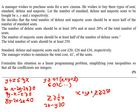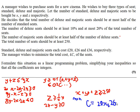Now we just need to write the linear programming objective function. Standard, deluxe, and majestic seats cost 20, 26, and 36 respectively. The problem is to minimise c, which equals 20x plus 26y plus 36z.